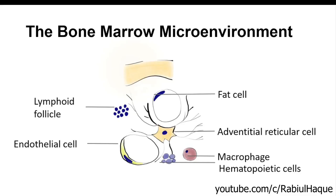Here is a simple diagrammatic image of the bone marrow microenvironment. On the top we can see the bony trabeculae or spongy bone. Beneath that we can see fat cells — recall that fat cells have their nucleus pushed to the periphery by accumulation of lipid inside the cytoplasm, making a mature fat cell easy to identify. We can also see lymphoid follicles, macrophages, and hematopoietic cells. In the center, we can also see a cell called the adventitial reticular cell, whose reticulin fibers provide the supportive framework to the bone marrow.